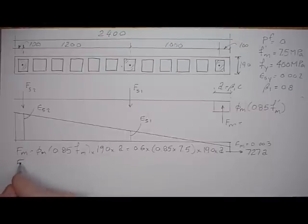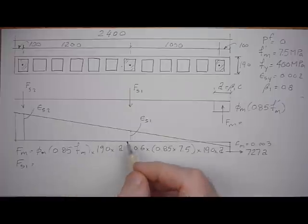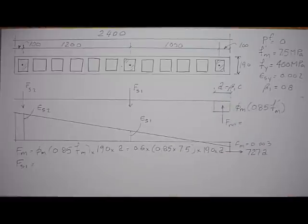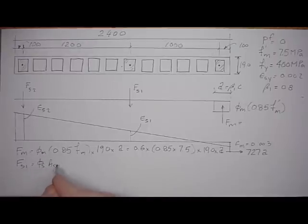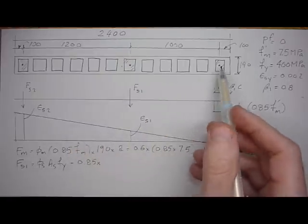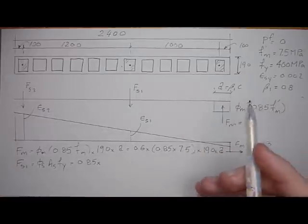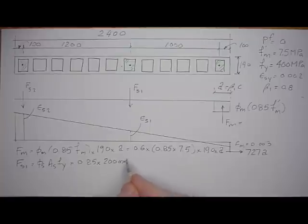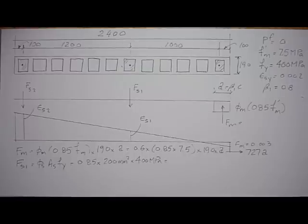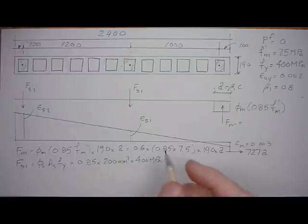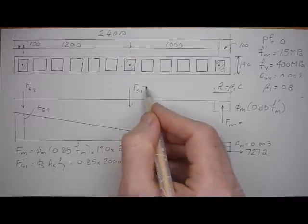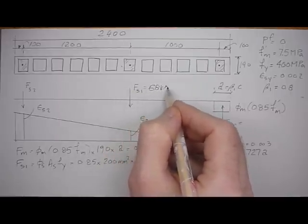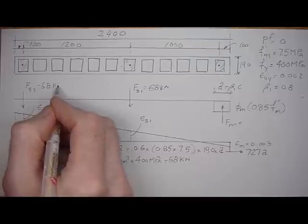Then the force in the steel — we're going to assume that the strain in the steel is larger than the yield strain of 0.002 and we'll check that assumption. We're using 15M bars in each grouted core; a 15M bar has an area of 200 mm². The force in each bar is 68 kN, so the force in each grouted core here is 68 kN.